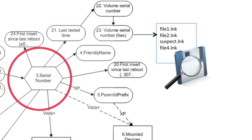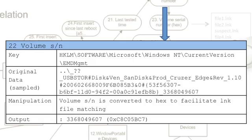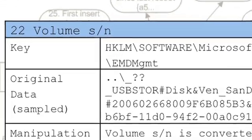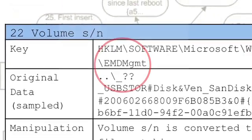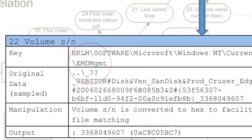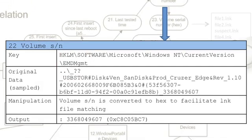I want to show you some detail about how this correlation works and how it is automated. My next slide shows the EMD management key. This is related to when you insert a USB device onto a system — the system will attempt to discover whether or not it could be used for cache, checking how much space is on the system and what speed it runs at. As a byproduct of this, it actually takes a record of the serial number of that volume.